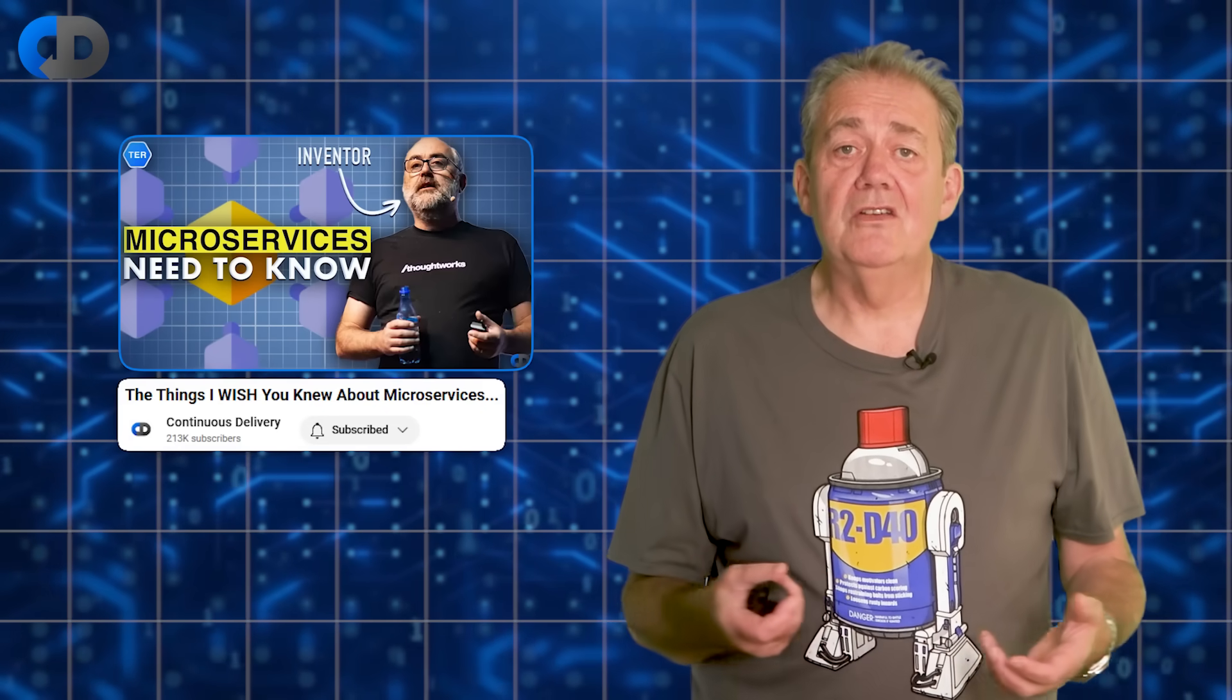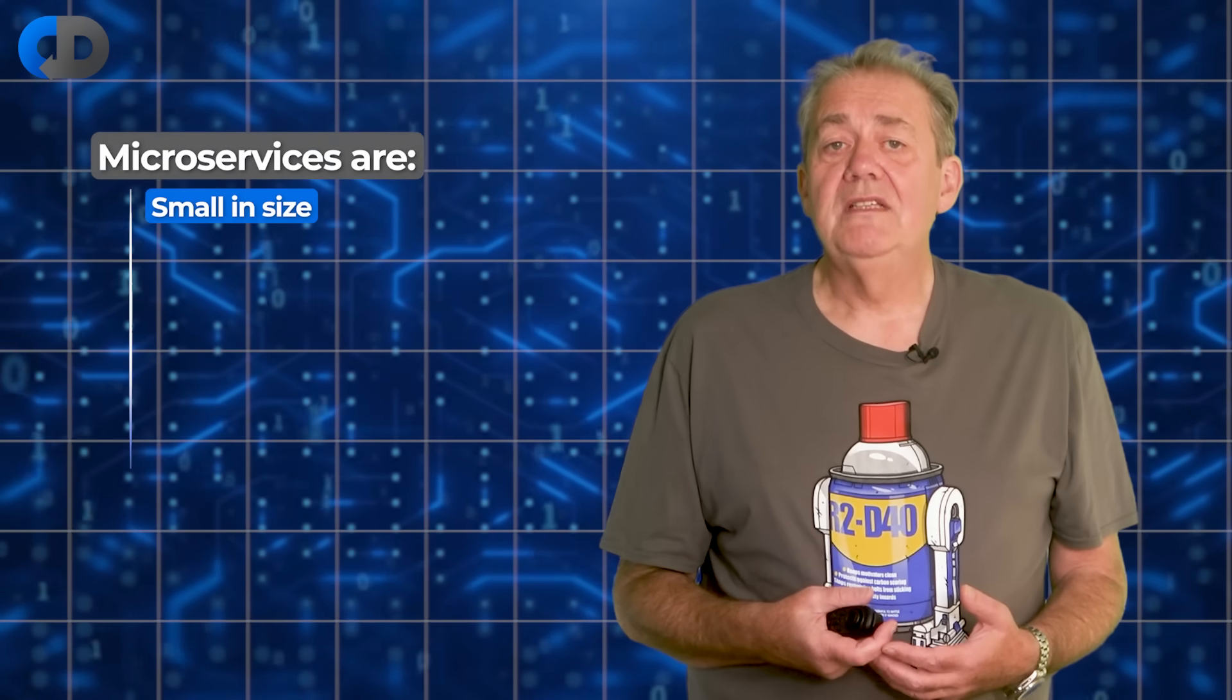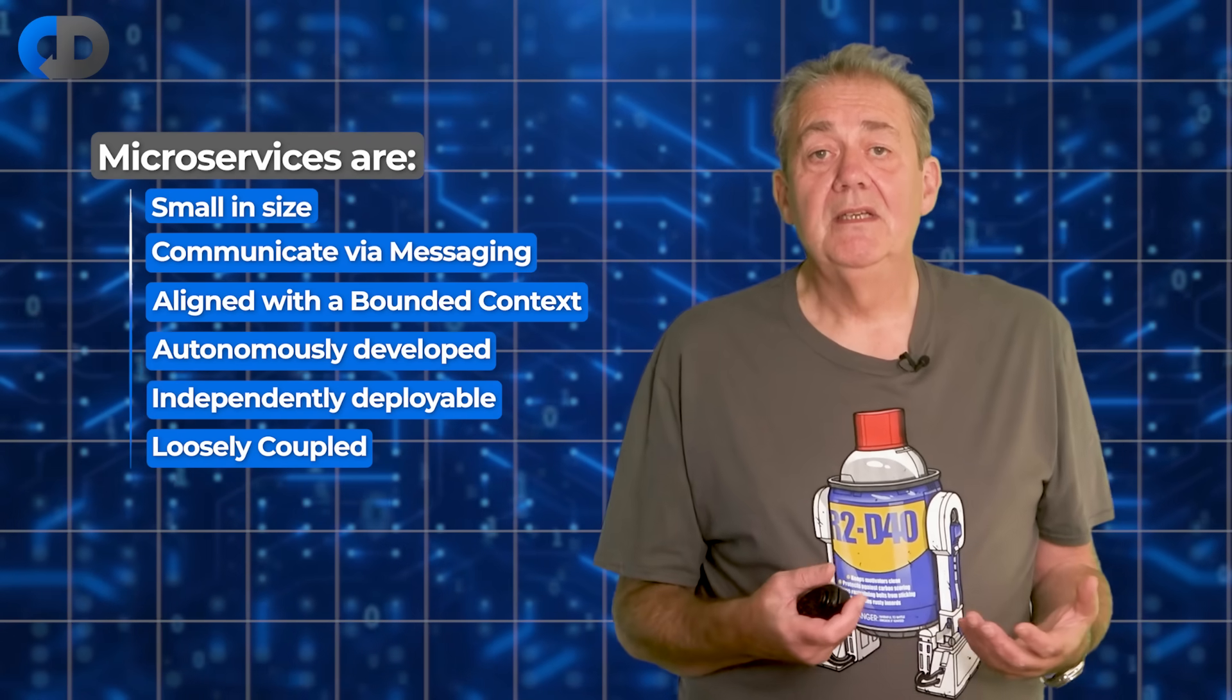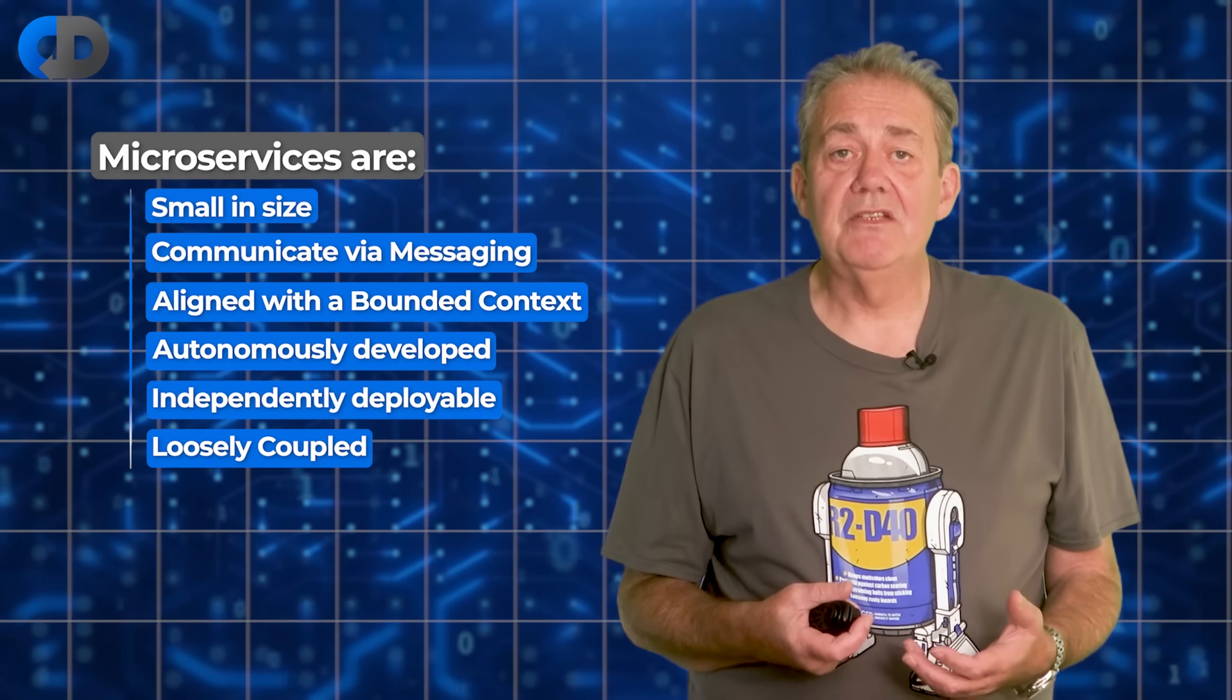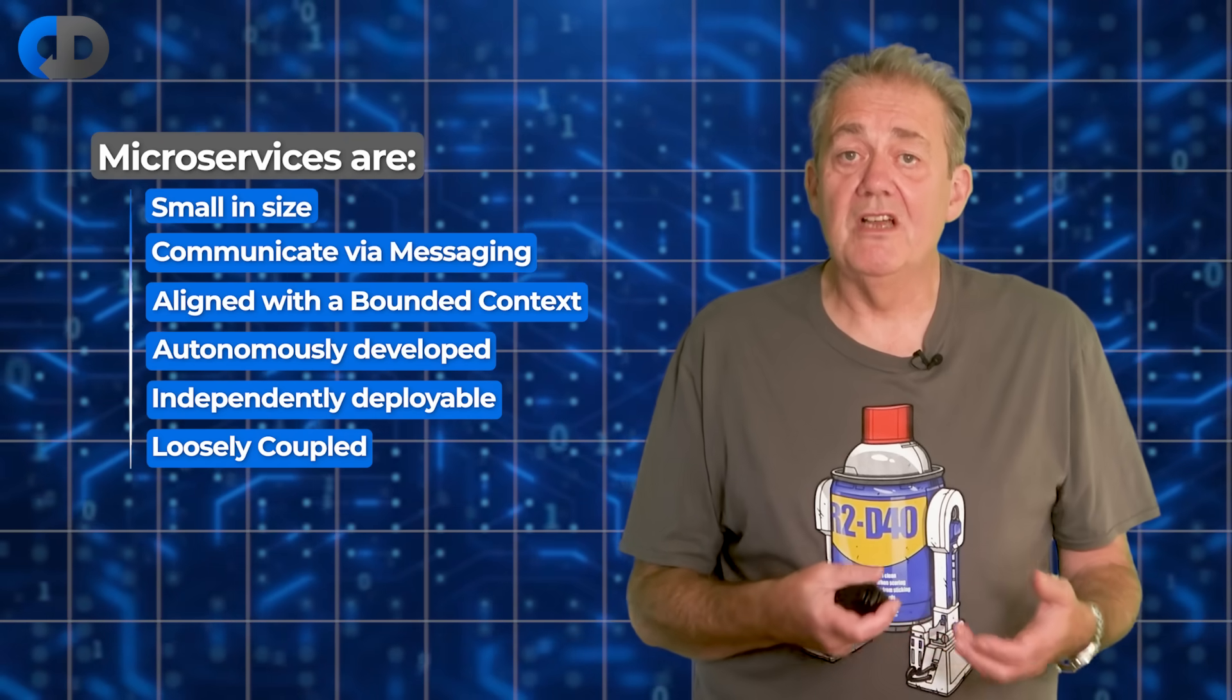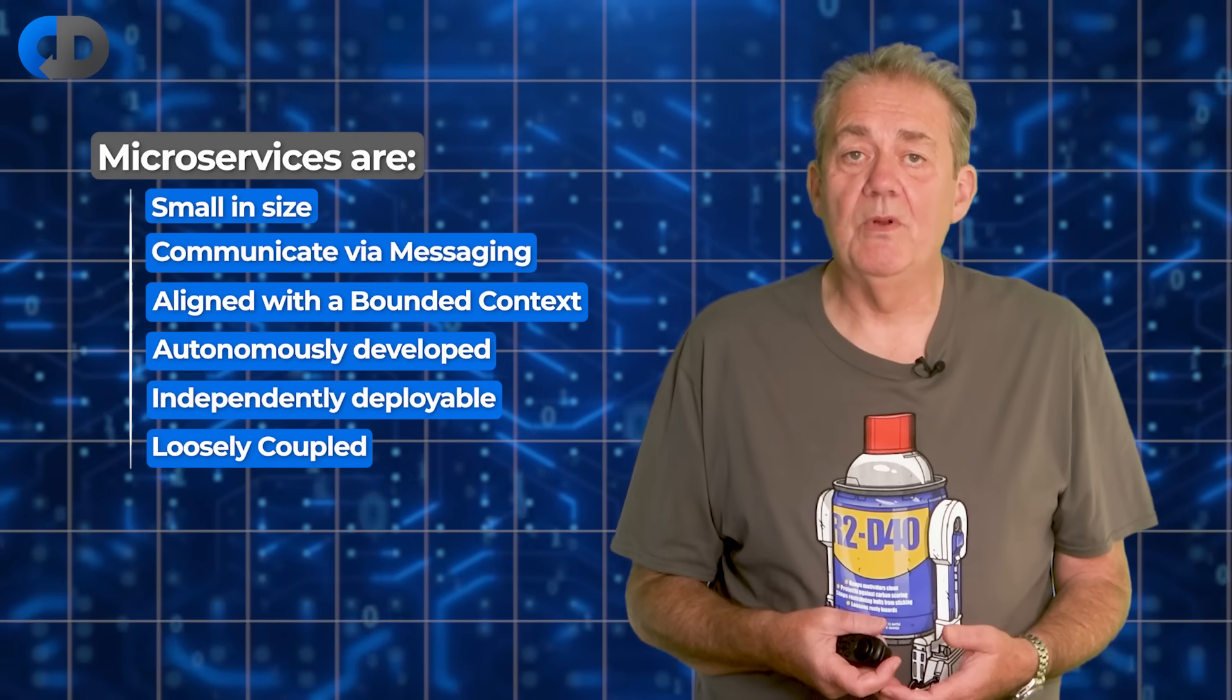As I discussed with the inventor of microservices, James Lewis, quite recently. Here's the usual working definition. And nearly all of these characteristics are primarily there as mechanisms to deliver autonomy for the teams that produce them by making the services independently deployable.